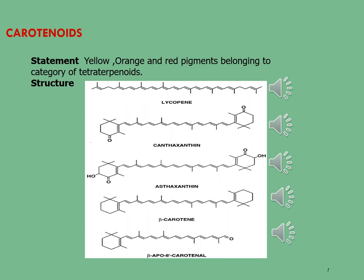Let's see what carotenoids are. Carotenoids are organic phytoconstituents isolated from less to medium polar fractions of plants, and they are yellow, orange, and red pigments belonging to the category of tetraterpenoids. Tetraterpenoids consist of isoprenoid units with the formula C5H8. Some important examples are lycopene, canthaxanthin, astaxanthin, and beta-carotene.